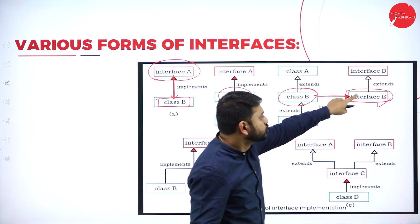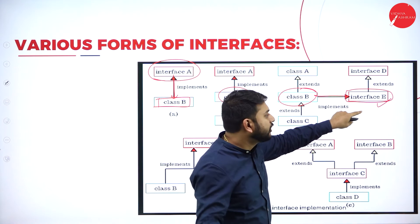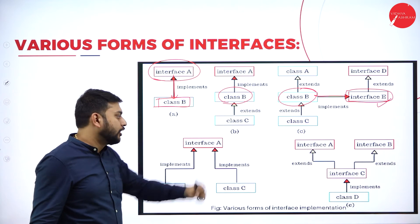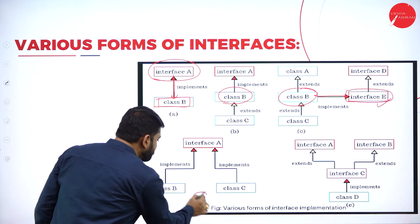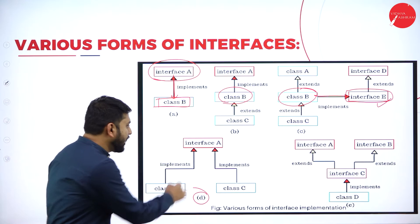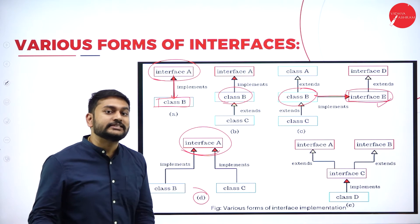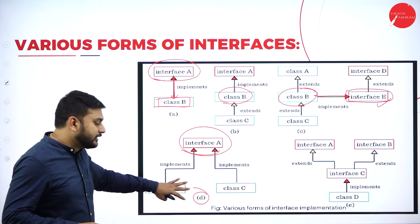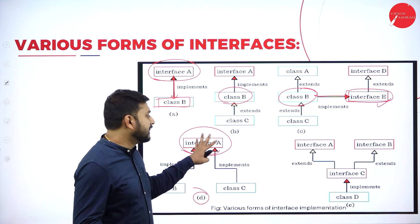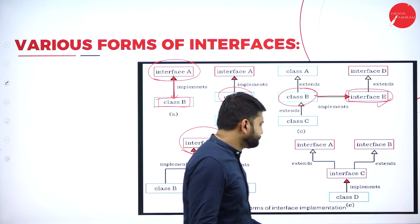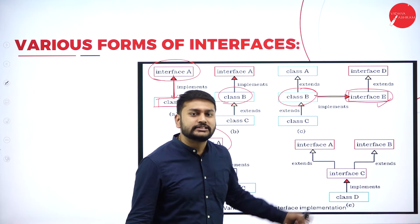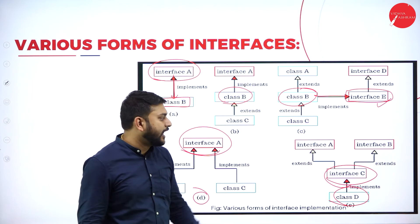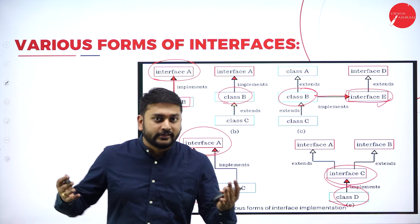An interface can also act as a super interface for a sub interface. In diagram D, two separate classes can each implement the same interface independently. It is also possible for a class to implement an interface that is itself extended from multiple interfaces — so interface C can be extended by interfaces A and B.